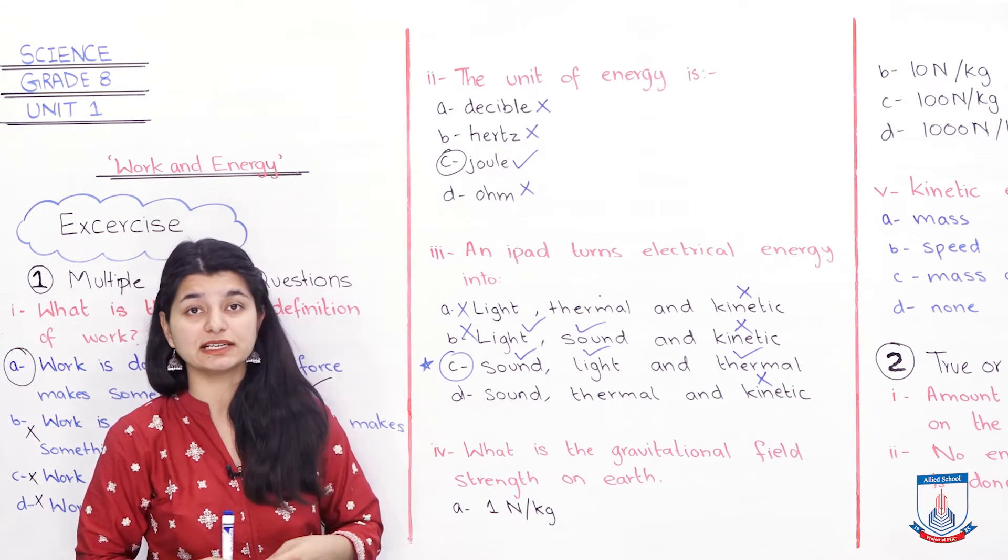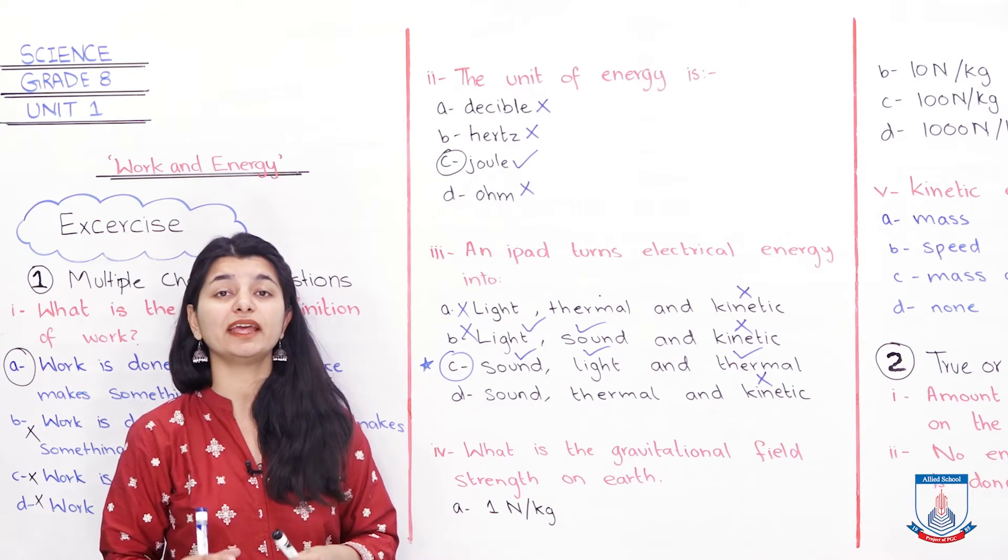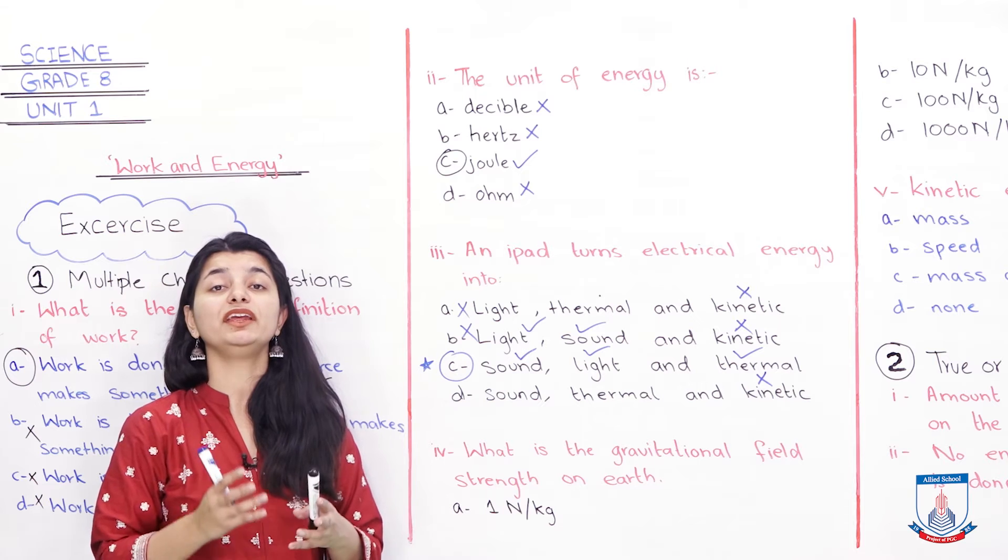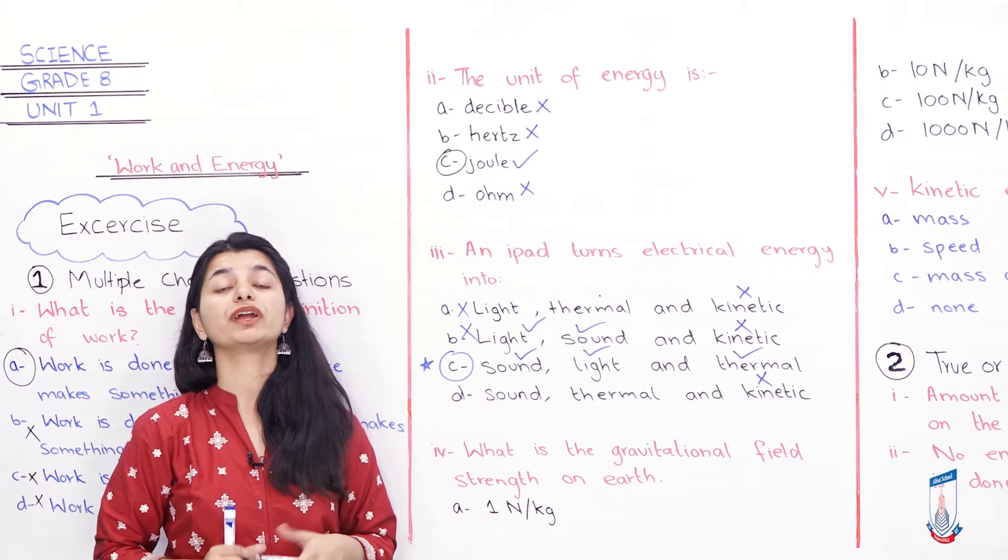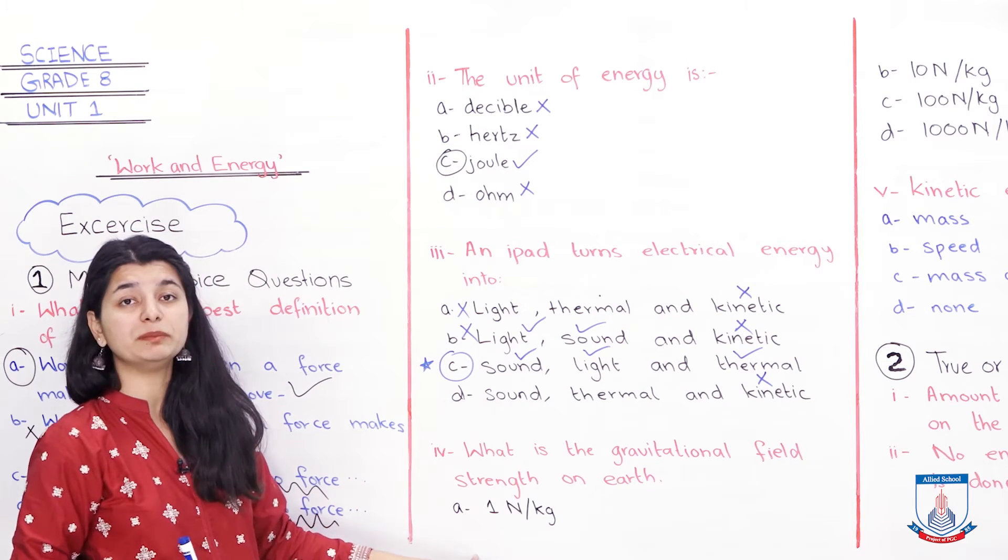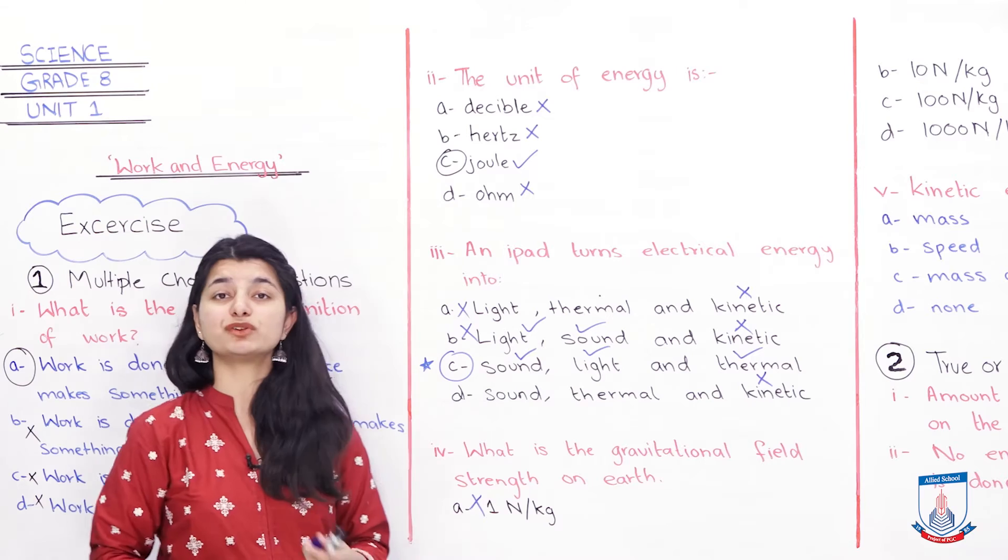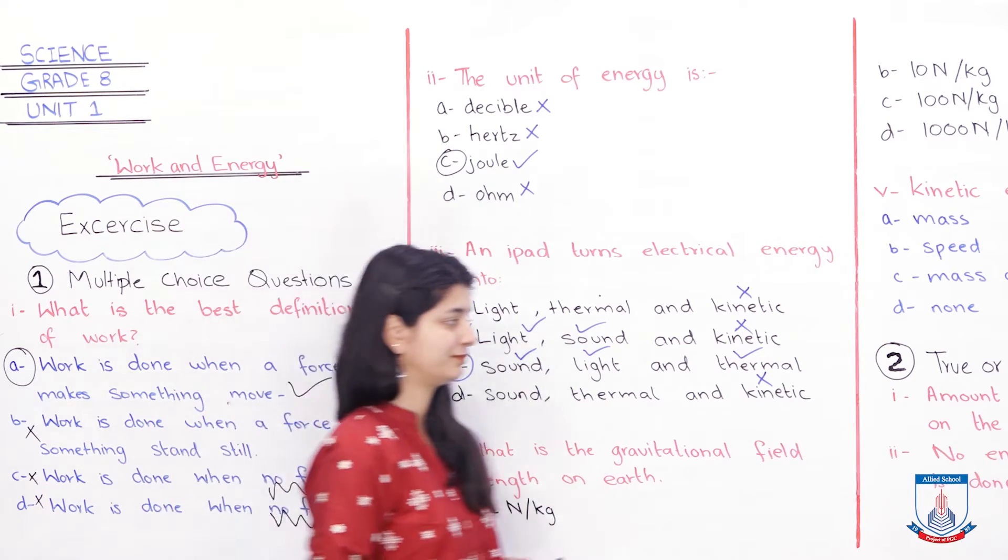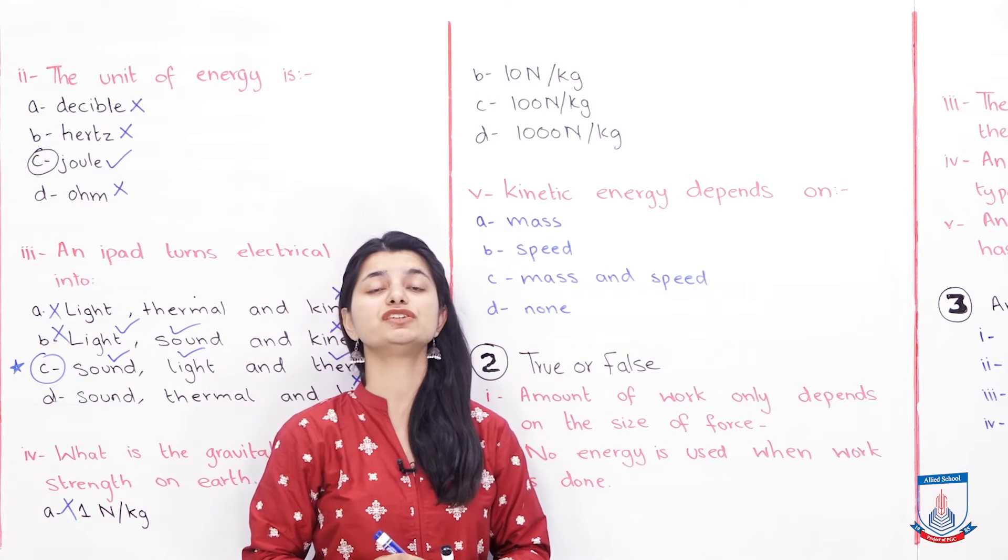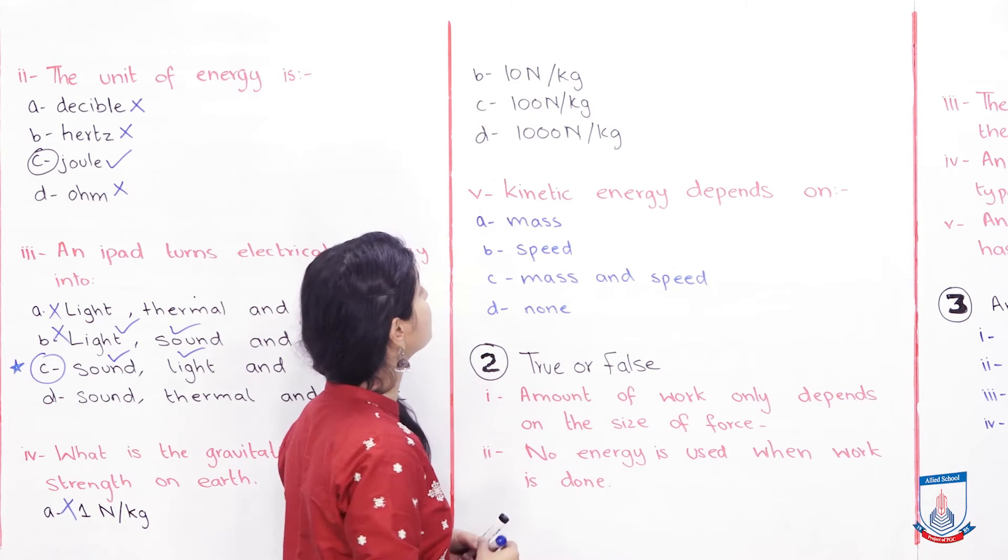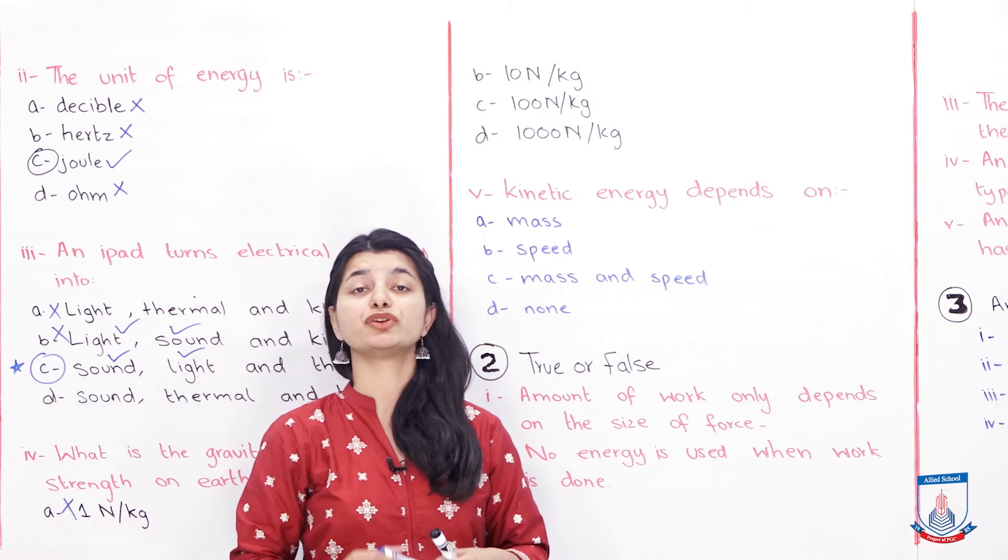Now let's see the fourth MCQ. What is the gravitational field strength on Earth? Now you can't do this, you have to know the answer to this. What is gravitational field strength, that means how much gravity acts on a kilogram, you should know. And how much is it? Is it one Newton per kg? No, not at all. Let's go see other options. There is 10 Newton per kg, 100 Newton per kg and 1000 Newton per kg.